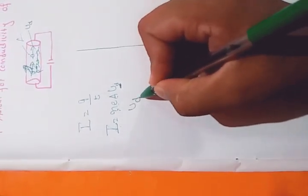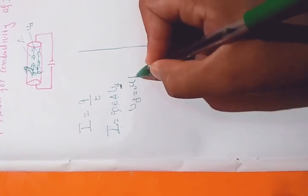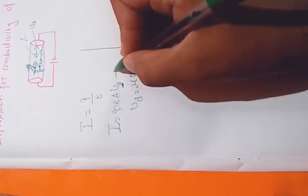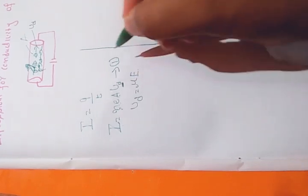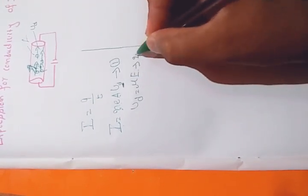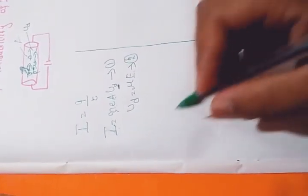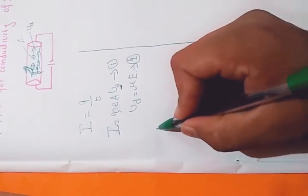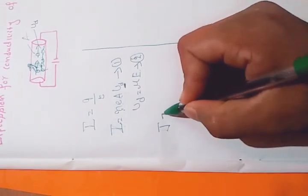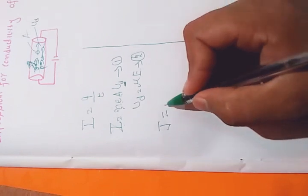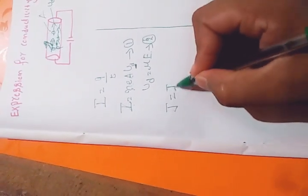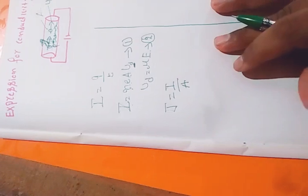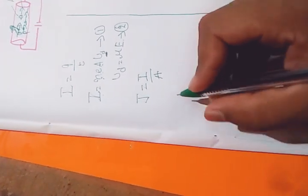The drift velocity Vd is nothing but μ times E, where μ is the mobility and E is the electric field. Using these expressions, let us now concentrate on the current density J, which is nothing but I divided by A — current flowing per unit area.